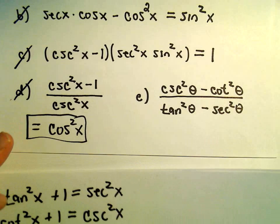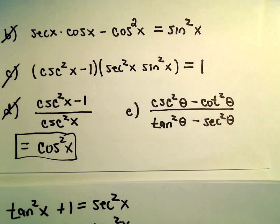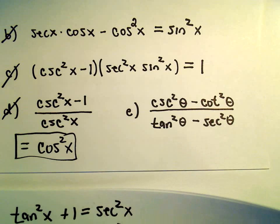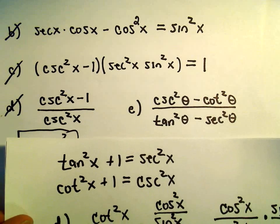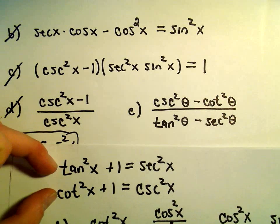Alright, so e here, we've got cosecant squared theta minus cotangent squared theta and tangent squared theta minus secant squared theta. Notice that looks an awful lot like these first two identities I put down, that's why I put them down there.